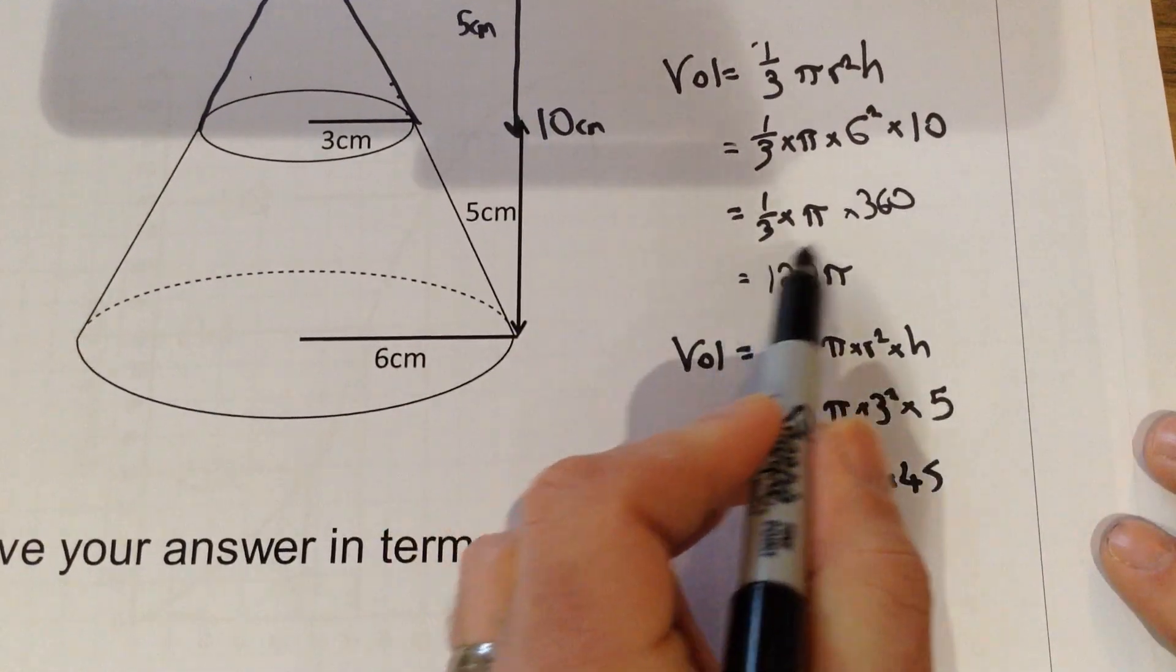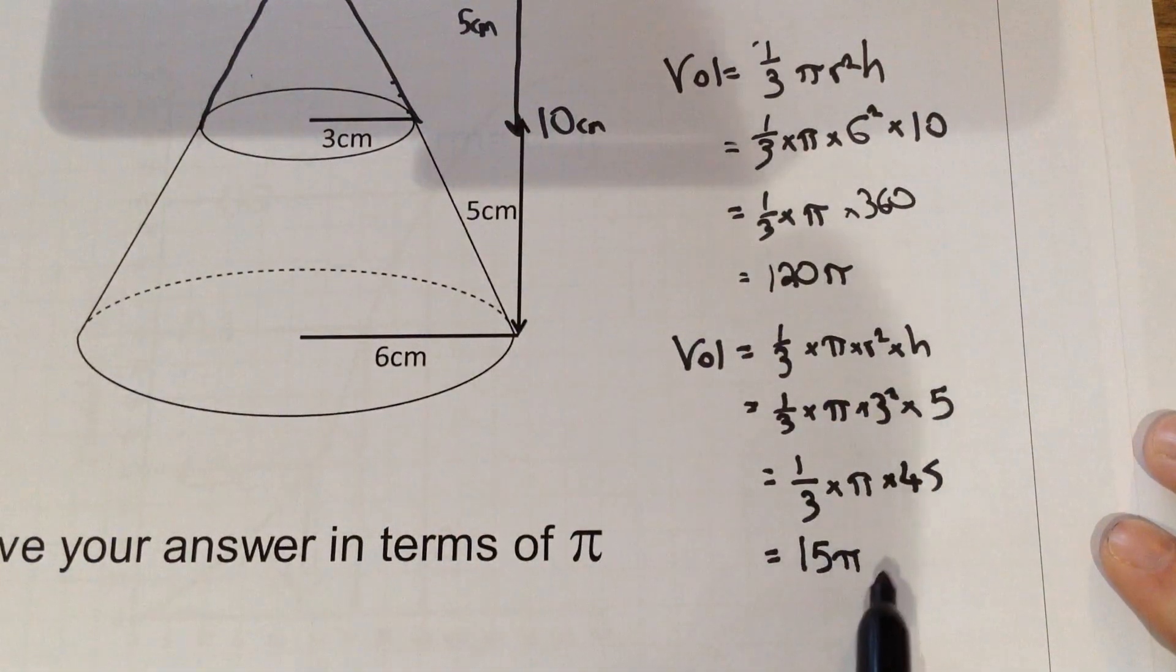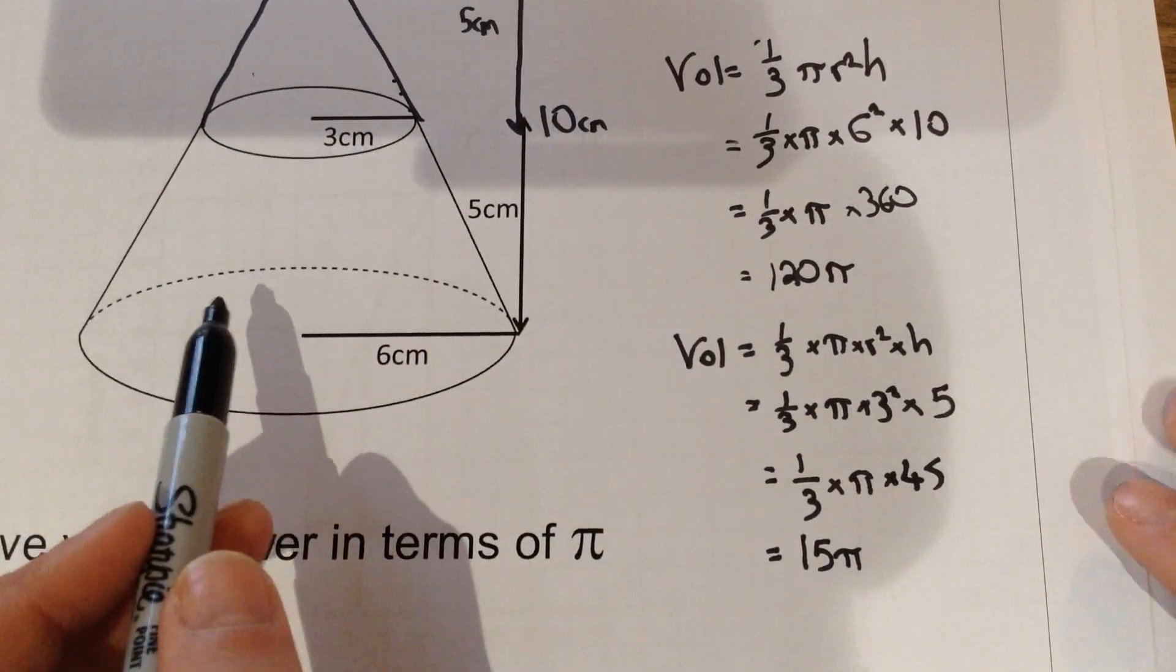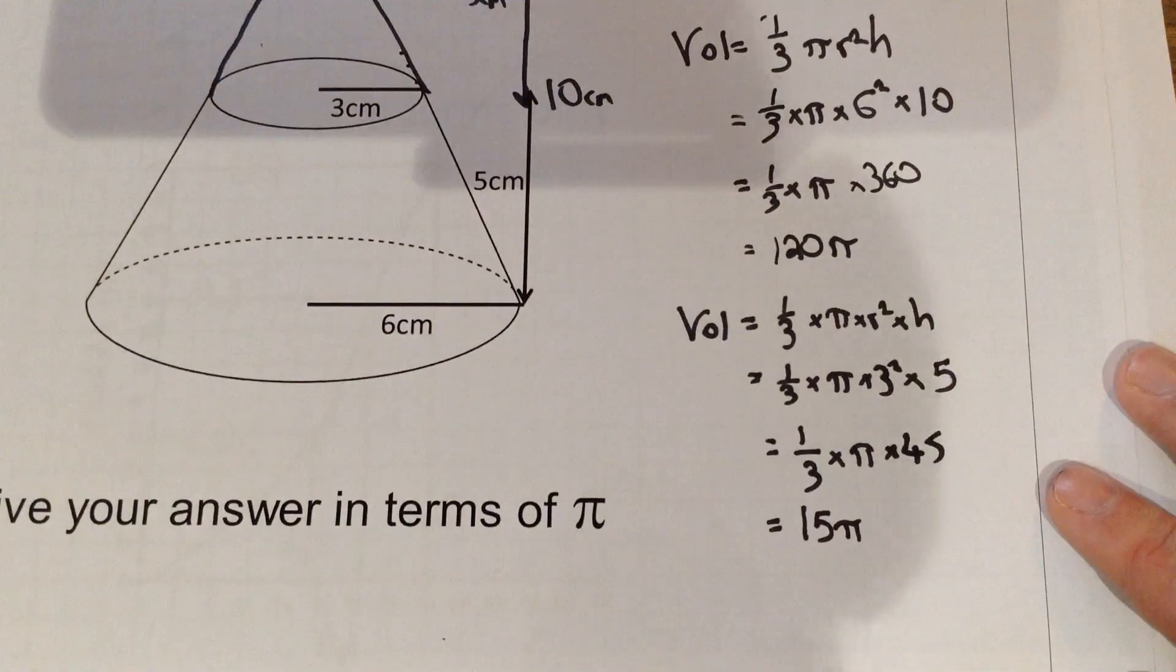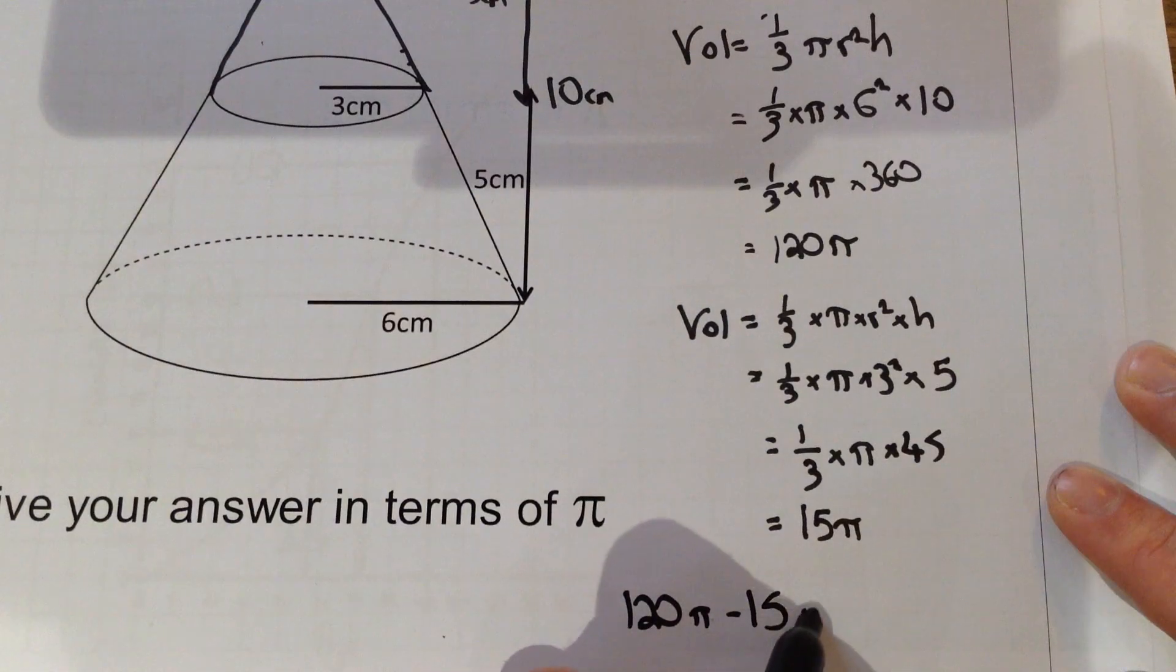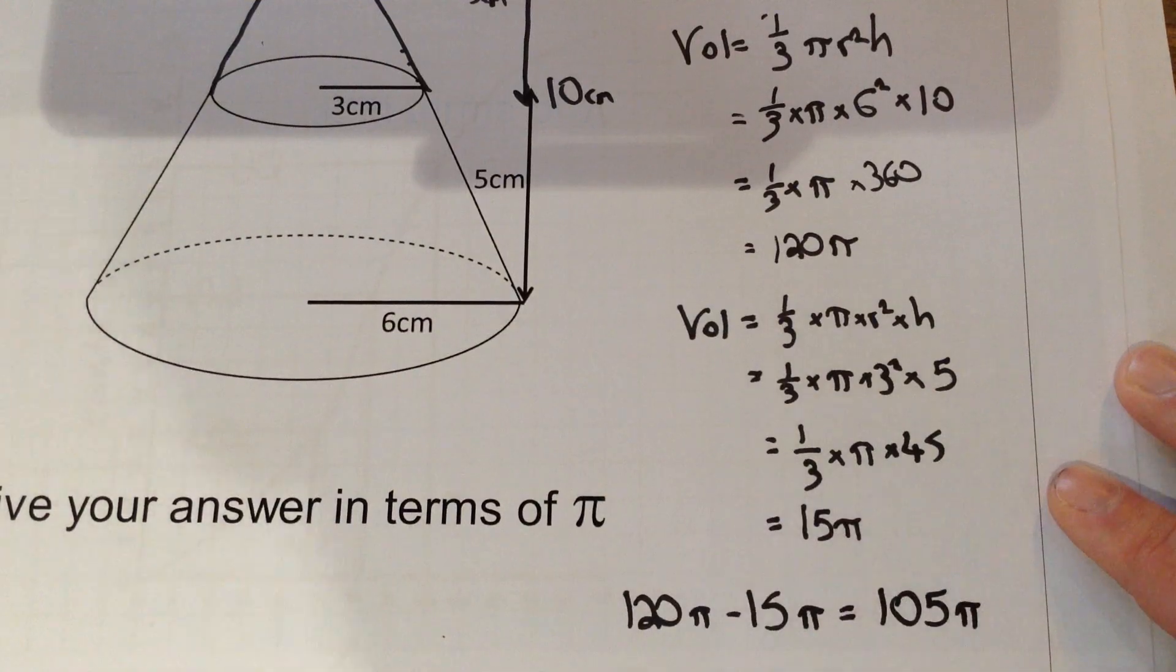So if this is the volume of the larger cone, here is the volume of the smaller cone. To work out the volume of this frustum, the bit that's left where we chop that top cone off, we would have to do 120π take away 15π, which would leave us as our final answer of 105π.